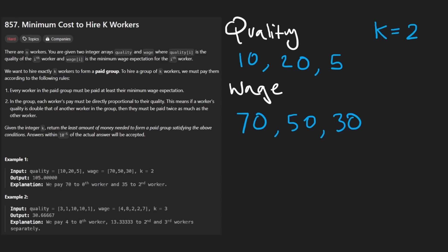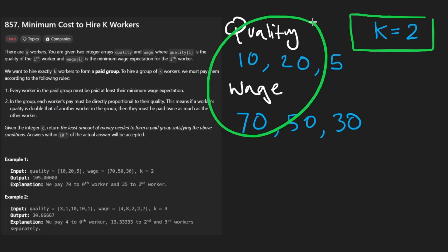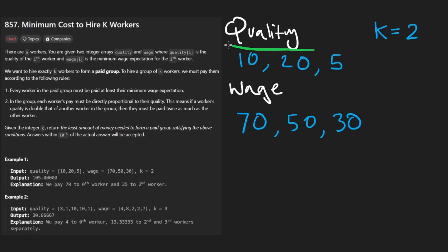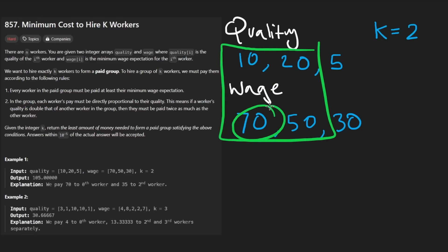Our goal here is basically to choose k workers — there's always going to be at least k workers to choose from, so we don't have to worry about that. We need to choose two of these workers, but we need to do it such that we minimize the wage, but it's not going to be that straightforward. We're not just going to take these wages and add them up, which in this example would be 120.